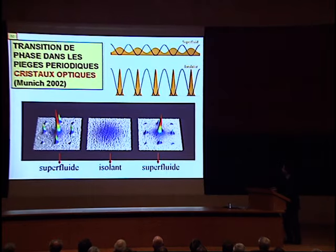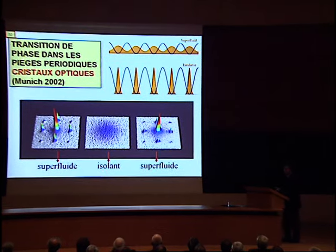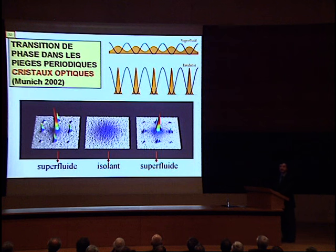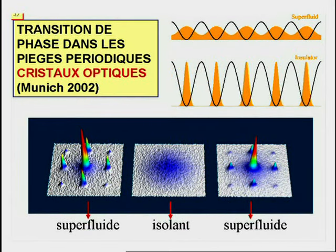Une direction de recherche qui s'est développée avec succès dans les dernières 3-4 ans est celle de la physique de gaz ultra-froid piégés dans des potentiels périodiques. Ces potentiels sont produits par des faisceaux lasers et les systèmes ainsi fabriqués sont appelés cristaux optiques. Ce sont des cristaux où la localisation n'est pas produite par les interactions entre les atomes mais par le champ laser qui produit justement les potentiels périodiques.